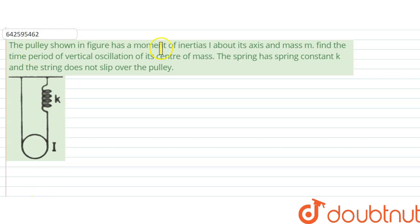Hello, we are giving you the question. The question says: The pulley shown in the figure has a moment of inertia I about its axis and mass m. Find the time period of vertical oscillation of its center of mass. The spring has spring constant k and the string does not slip over the pulley.